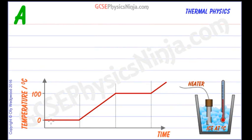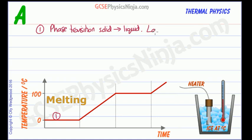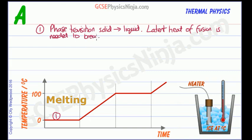So here we've got the ice at zero degrees — this is ice and water in a kind of transition phase, and we'd actually call that a phase transition. We've got a phase transition from the solid ice, and we are breaking the bonds of the solid to form a liquid, so that means we're having to put energy in. The latent heat of fusion is needed to break the solid bonds.